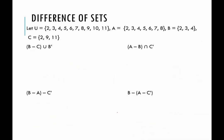Four more examples in case you haven't had enough. Always pause the video and try them first. Looking at the problems, I don't need A complement, but I do need B complement and C complement. B complement — what's in the universe not in B — is 5, 6, 7, 8, 9, 10, 11. And C complement is 3, 4, 5, 6, 7, 8, and 10.